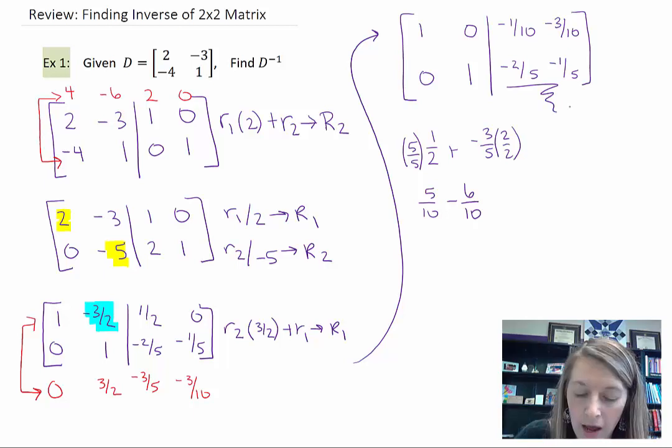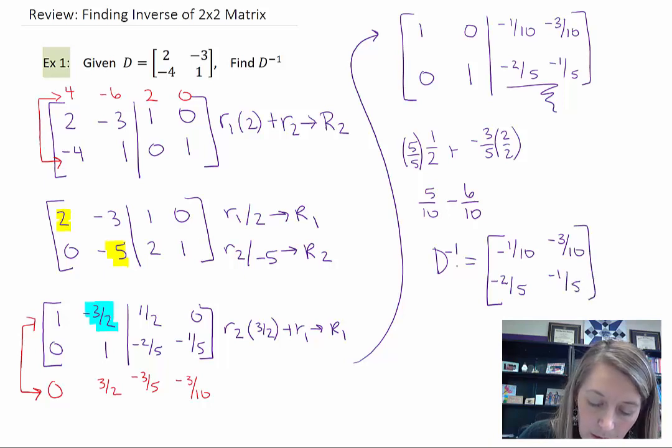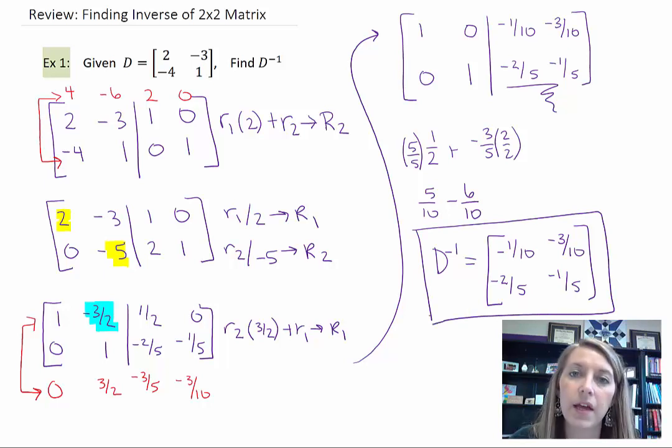Over here on the right, I have my inverse matrix. So D inverse is negative 1 tenth, negative 3 tenths, negative 2 fifths, and negative 1 fifth. And so we have found the inverse of the matrix using our row reduce echelon form method.